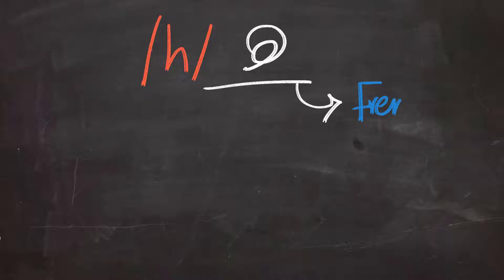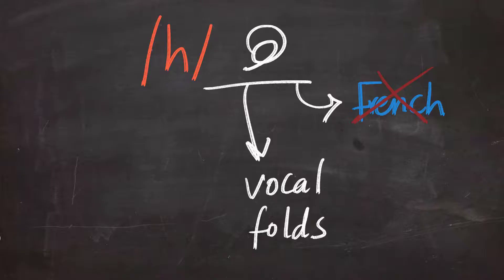The H can be a bit challenging for those people whose mother tongue is French, since they are not used to it. But how is H actually produced? H is produced through letting a gush of air through your vocal cords. We also call it the vocal folds. And it resembles the H in English.